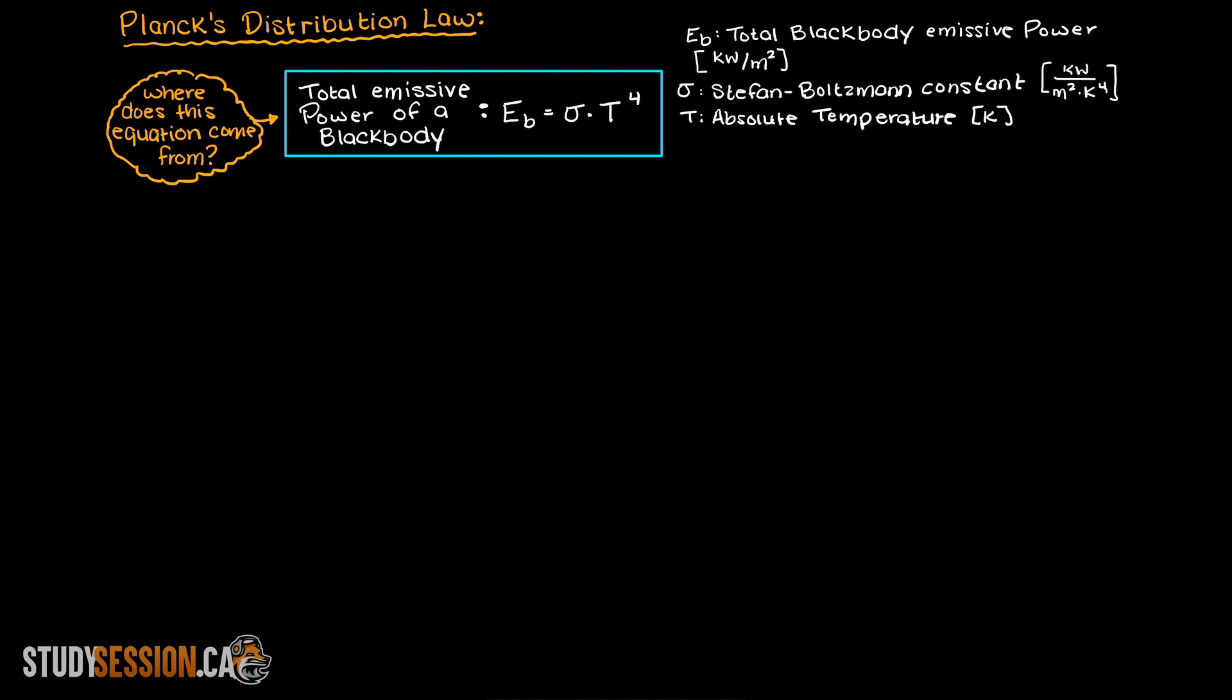To achieve this formula, let's assume we only want the emissive power given off by a single wavelength, which we will denote as d lambda. So if we are interested in the amount of radiation emitted by this infinitesimally specific wavelength, how do we know the emissive power produced by it? Well, that is where Planck's distribution law comes in.